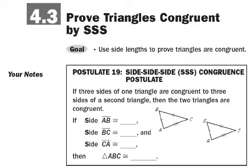Okay, class. So yesterday we learned that by definition, in order to show that two figures are congruent, you have to show that all of their corresponding parts are congruent. So for triangles, that's six things altogether — three sides, three angles.